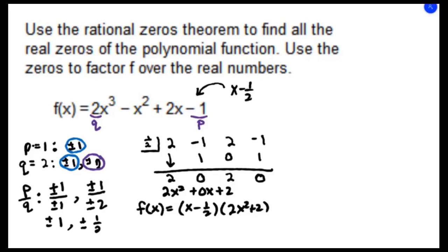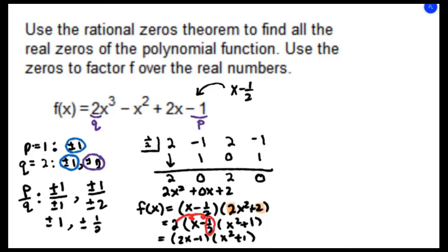I can write the polynomial in factored form as (x - 1/2)(2x² + 2). I can factor this further — both terms share a factor of 2, giving (x - 1/2) · 2(x² + 1). To avoid the fraction, I distribute the 2 to get (2x - 1)(x² + 1). So we've written the polynomial in its factored form.